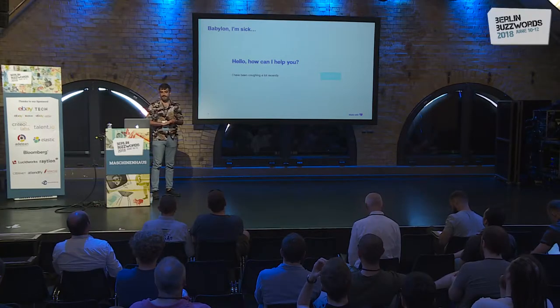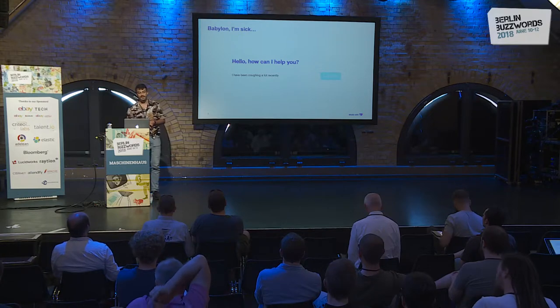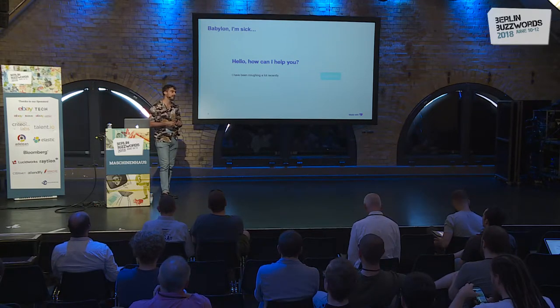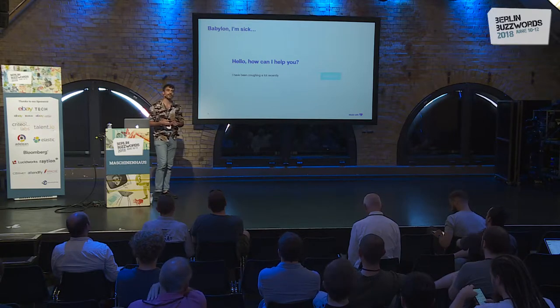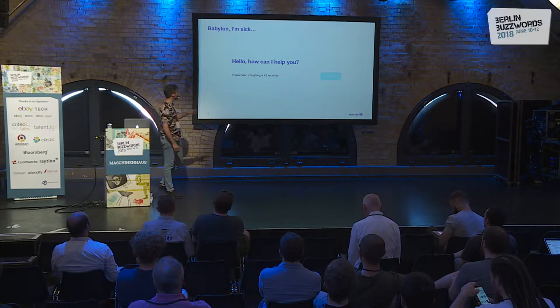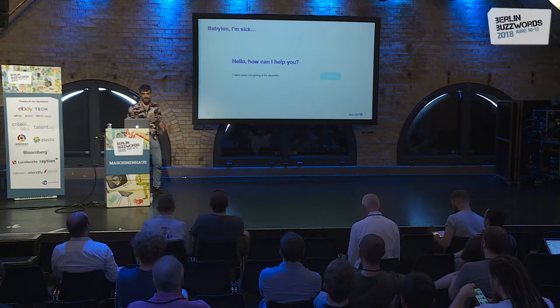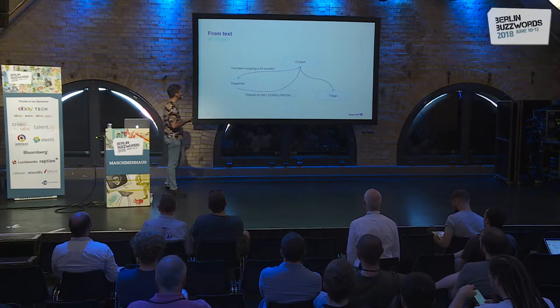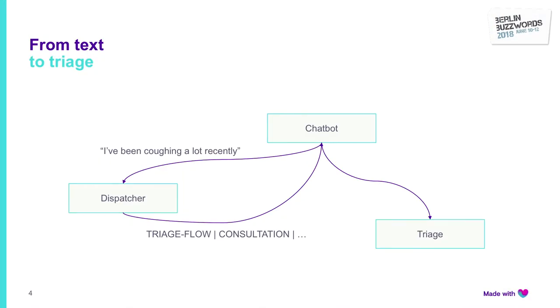Instead of starting with architectural diagrams, let us follow the data. If you go to the Babylon Health website, the first thing you see is our chatbot. You can tell our chatbot about some symptoms you are experiencing, and at the end of the chat you get an outcome showing possible medical causes. For example, if you write "I have been coughing a lot recently," we have a chatbot microservice that takes this text and sends it to our dispatcher.